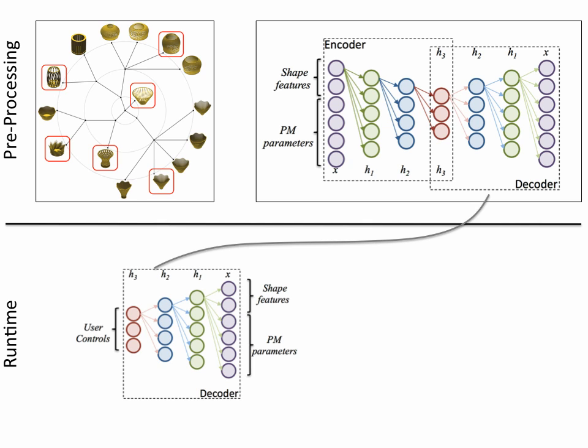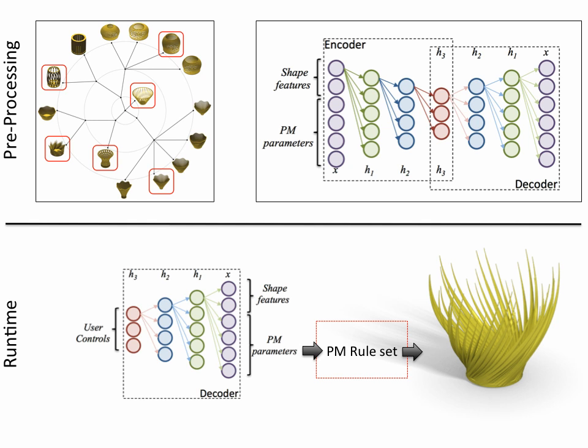During runtime, we provide the decoder part of the trained autoencoder network as a means to generate new shapes. In this mode, new models can be created in real time by specifying only the reduced dimensional parameters as input.